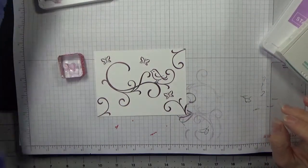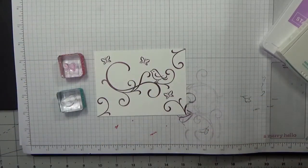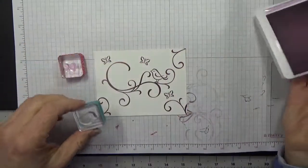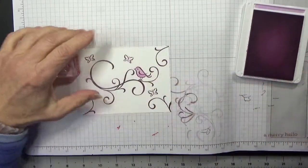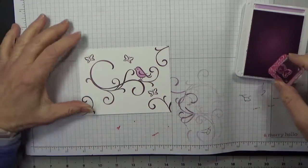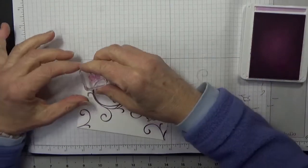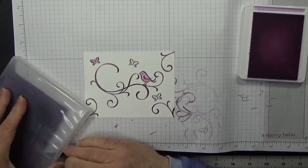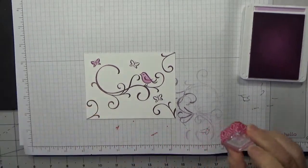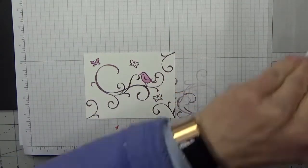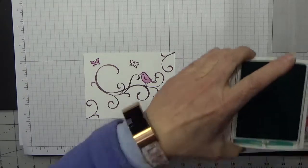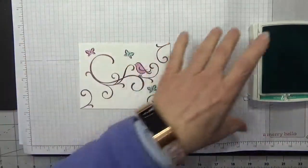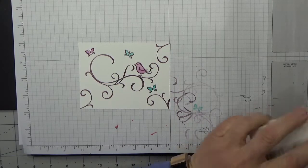We're going to fill in the butterflies and the bird with other colors. The bird is going to get filled in with Fresh Freesia. Right there. And then I'm going to fill one of the butterflies in with the Fresh Freesia. Then I'm going to clean my butterfly off.